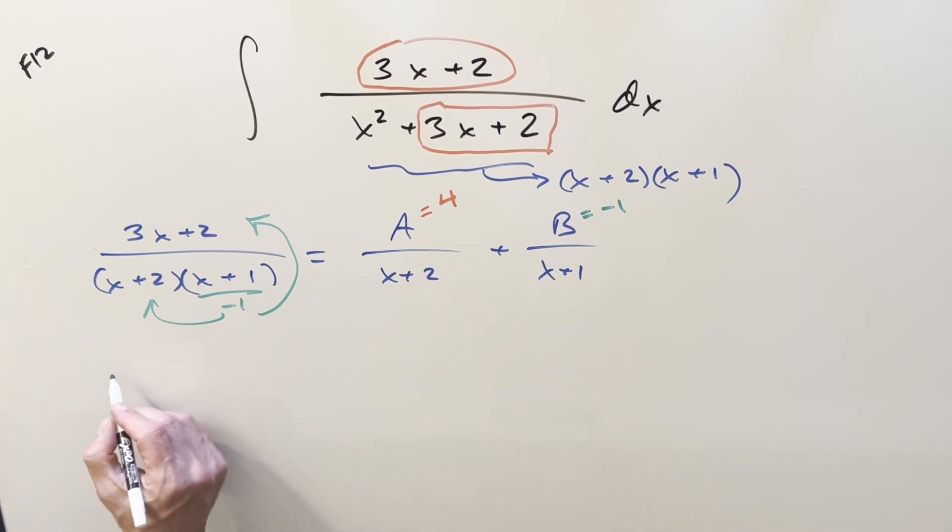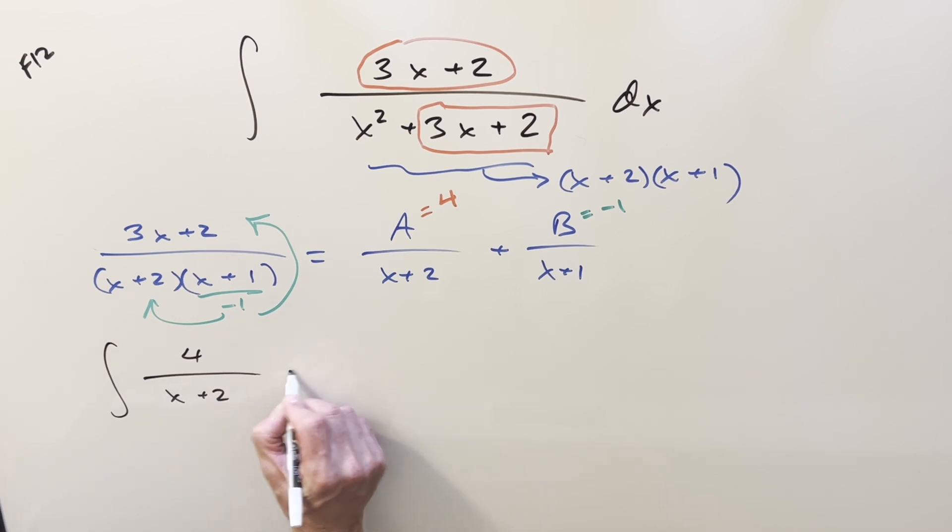So we'll just take it and plug this thing back into our integral with the coefficients we found. So we have just 4 over x plus 2. Then let's write a minus. We'll bring the minus out front and write it as 1 over x plus 1 dx.